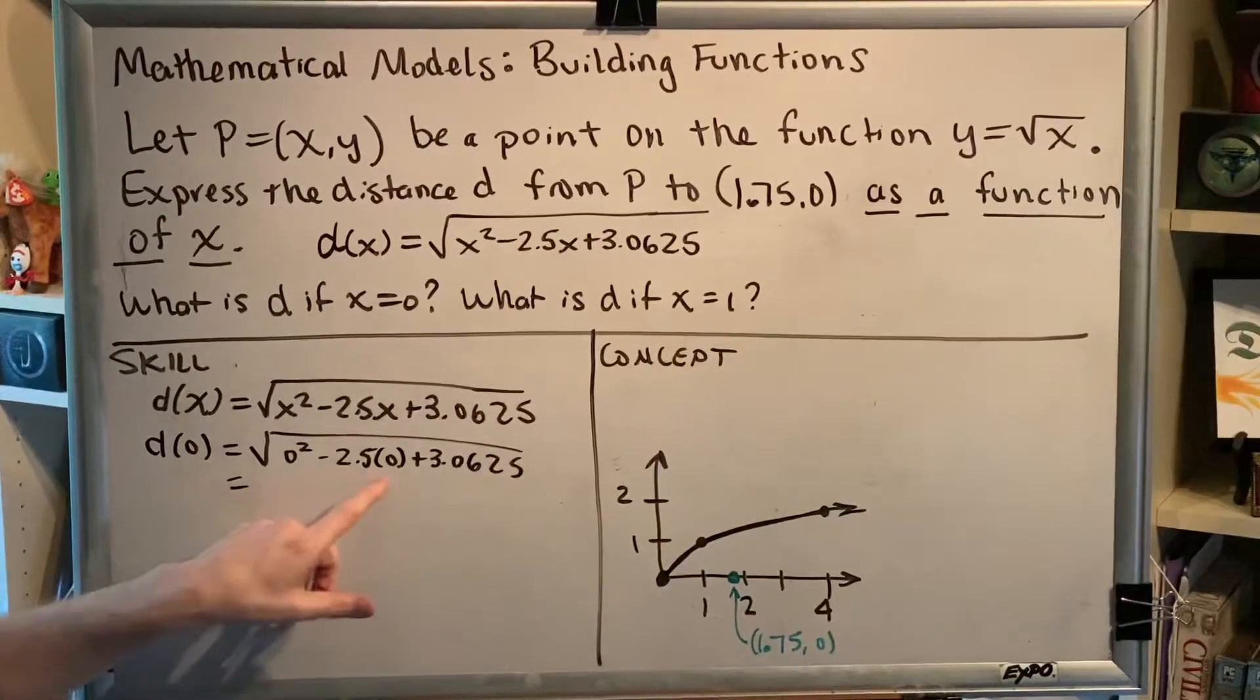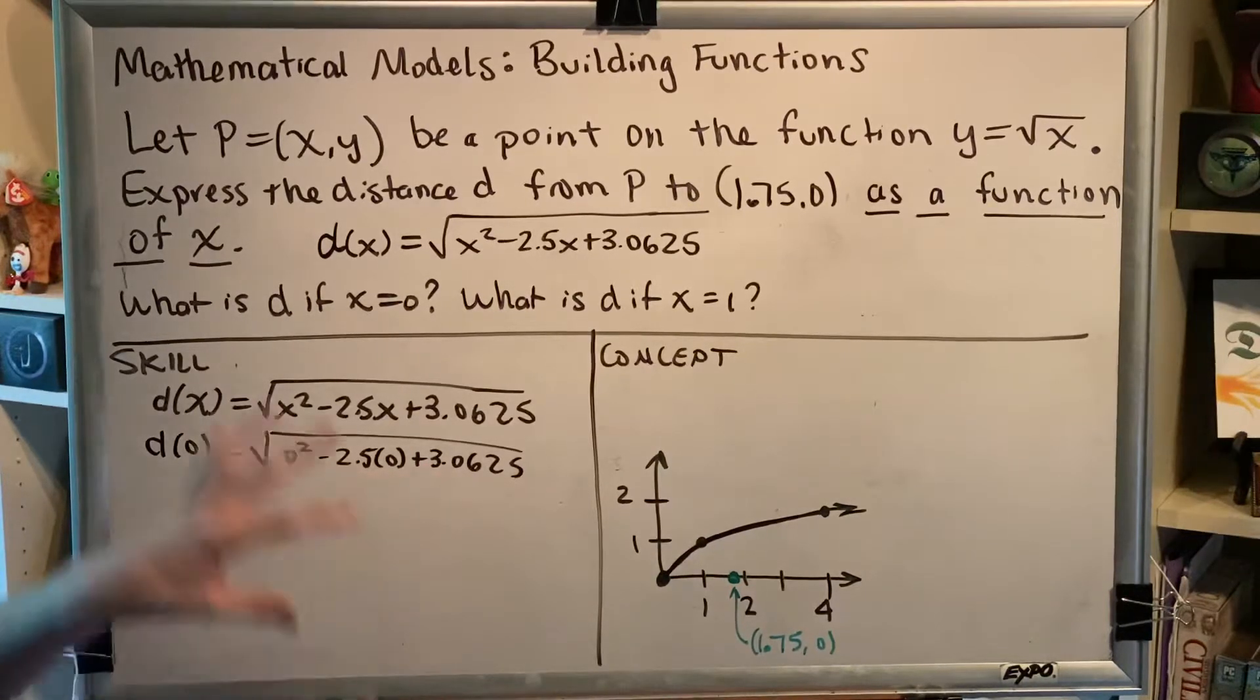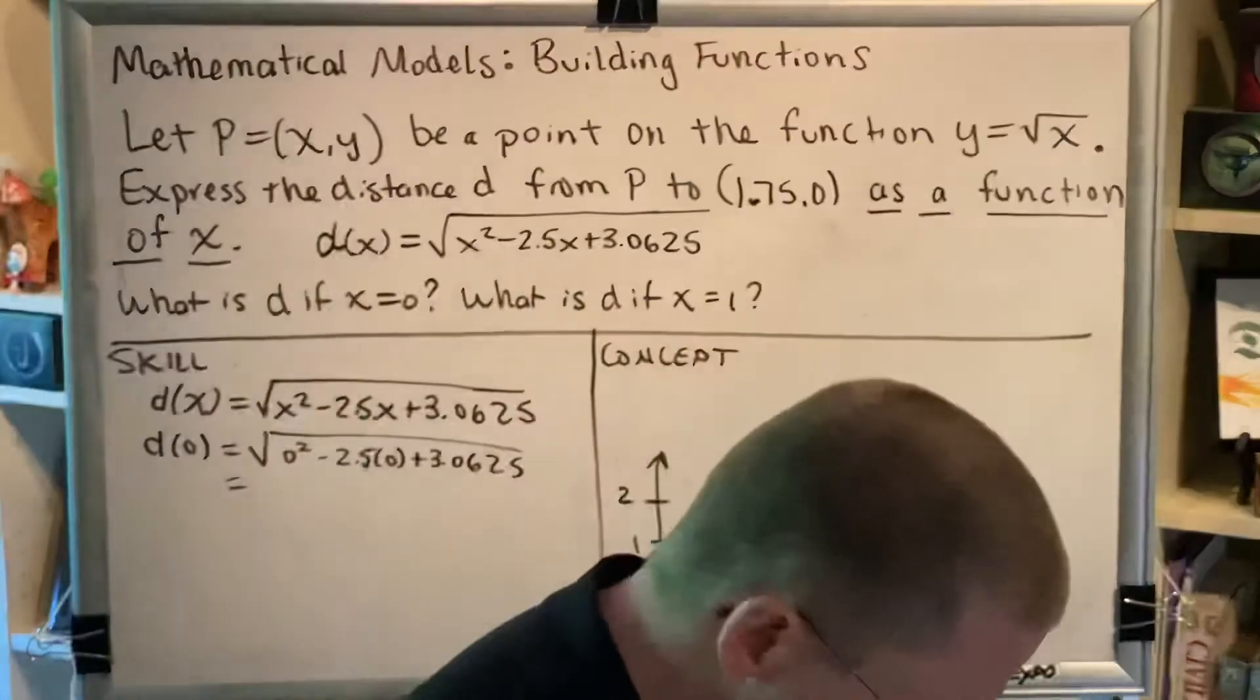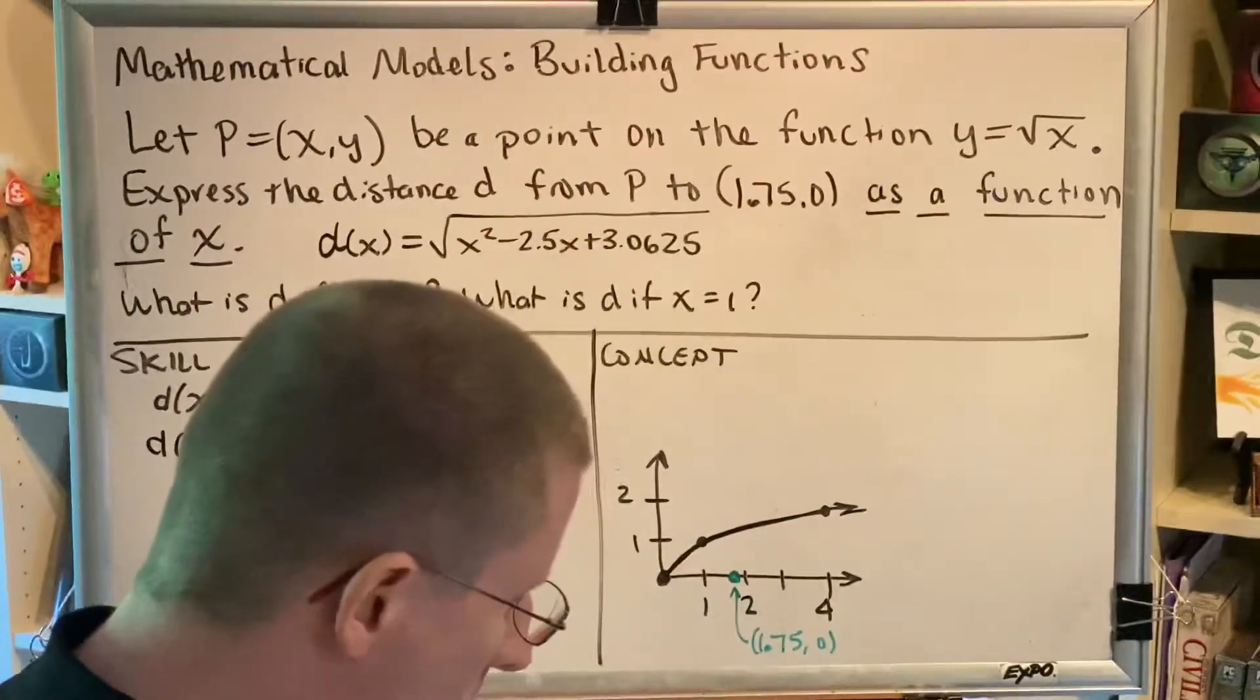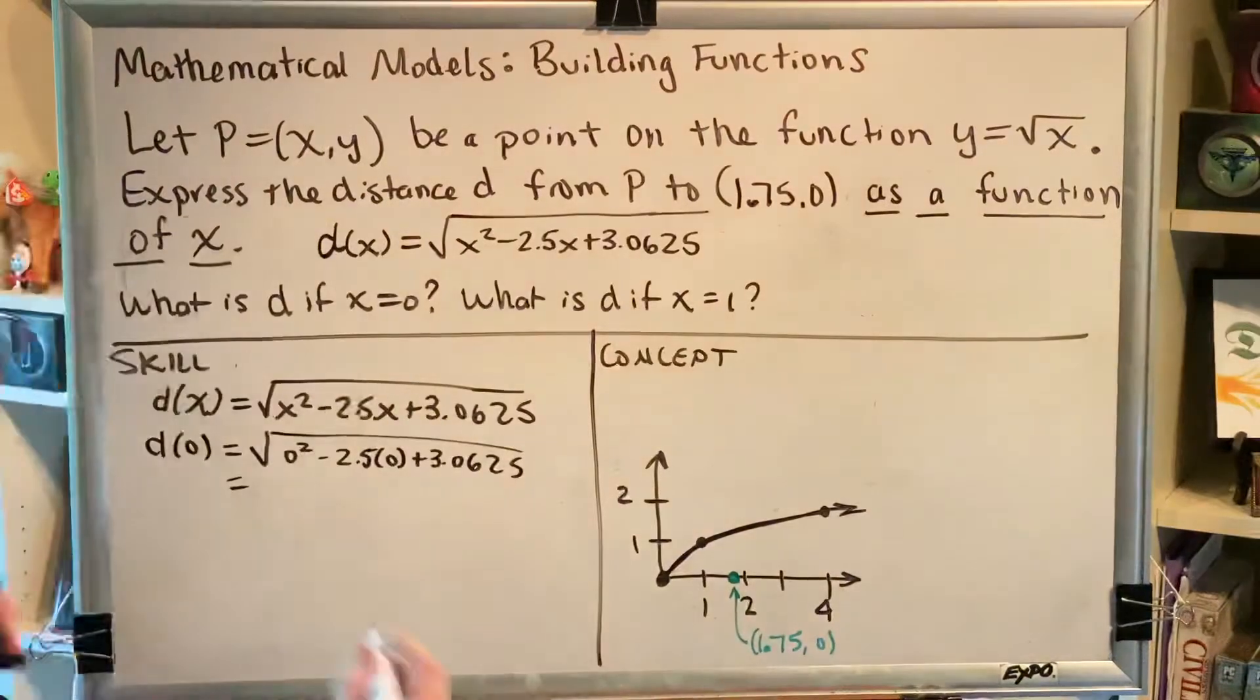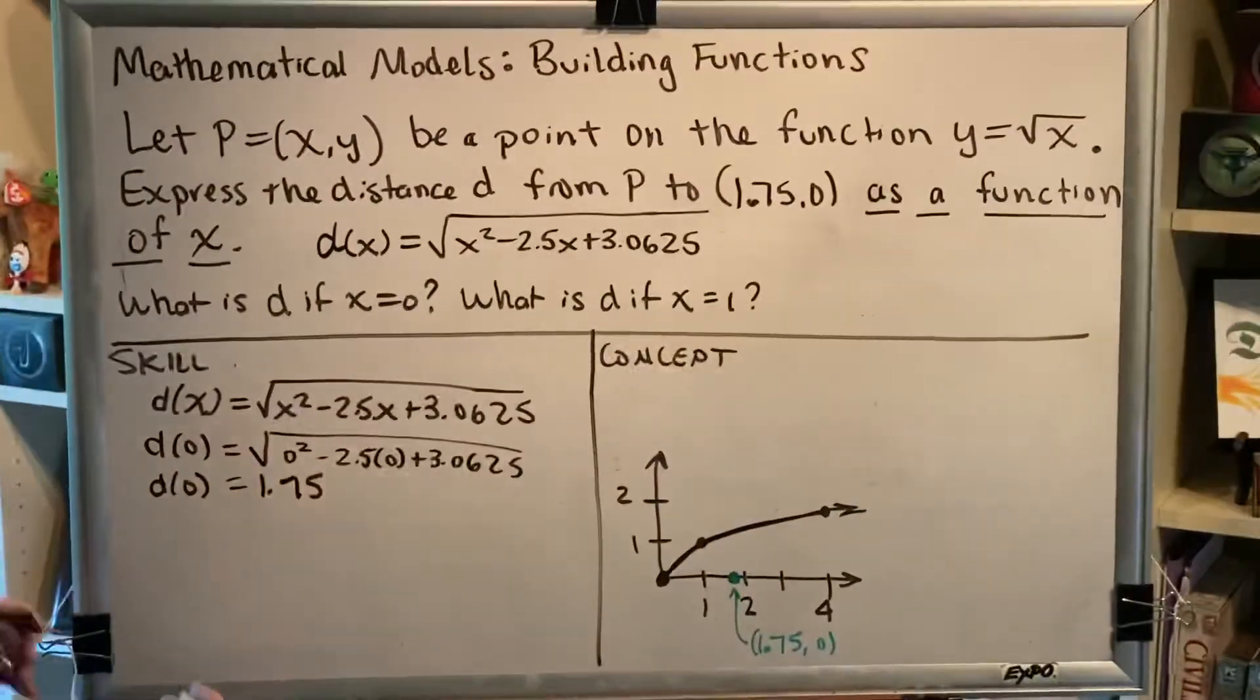So all of this over here is just 0. And then when you add 3.0625, that's what you're going to have under your radical. So we're looking for the square root of 3.0625. So let's pick up our calculators and ask, what is the square root of 3.0625? And we get the result, 1.75. So d(0) equals 1.75.